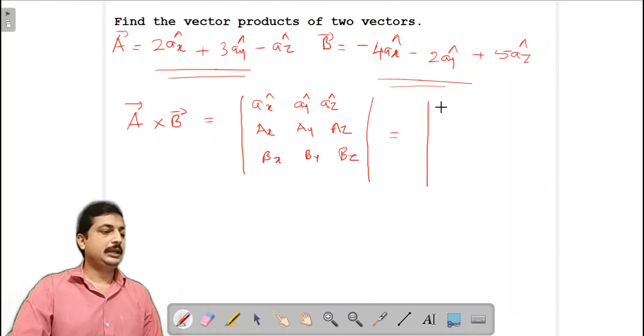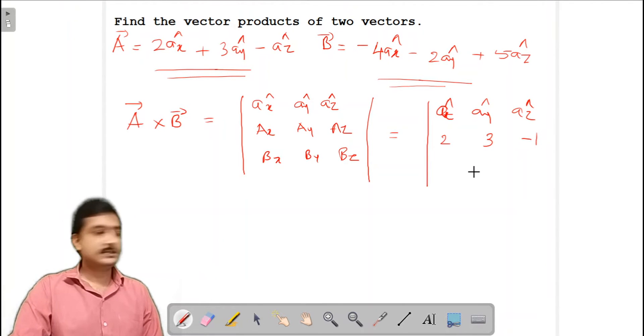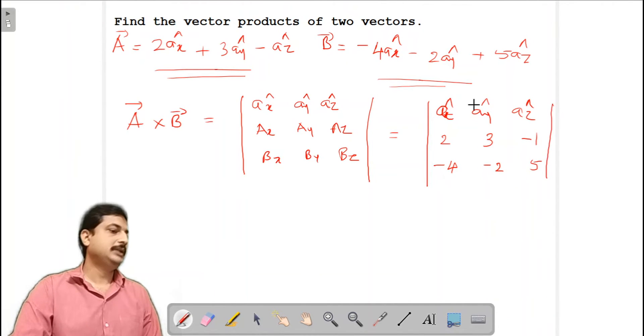Now to this determinant you substitute the values. We know that ax is 2, this is ax cap, ay cap, az cap. Then substitute the values of ax, ay and az. ax is 2, ay is 3 and az is minus 1. Then this is minus 4, minus 2, then 5. Then we need to find the determinant.